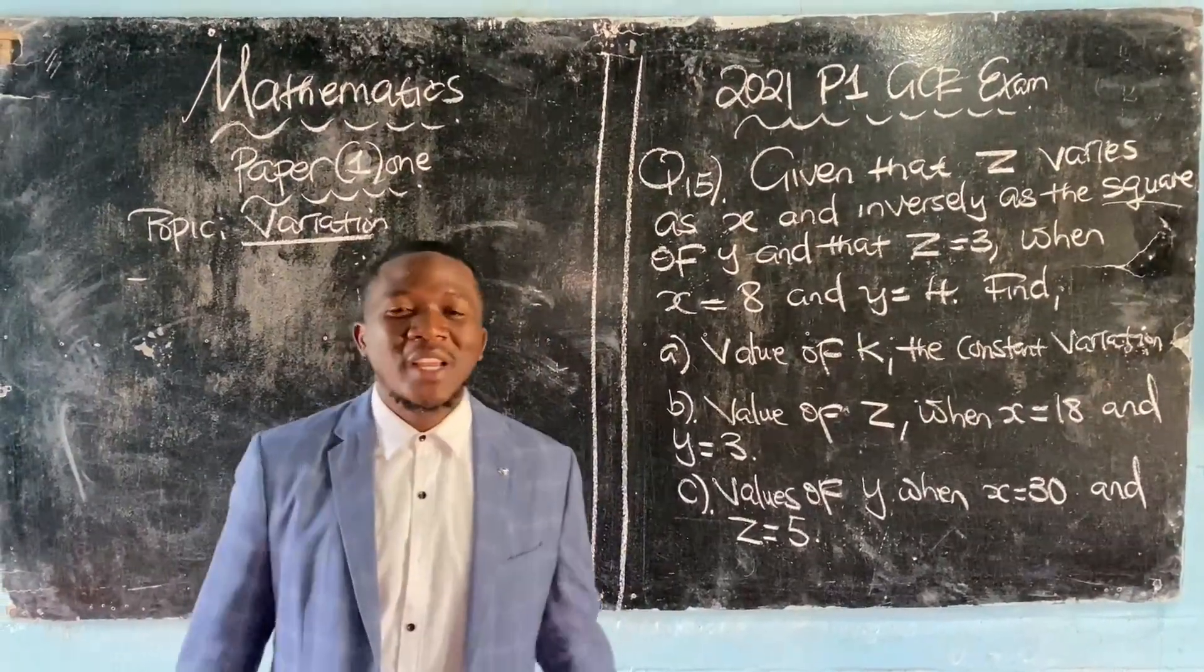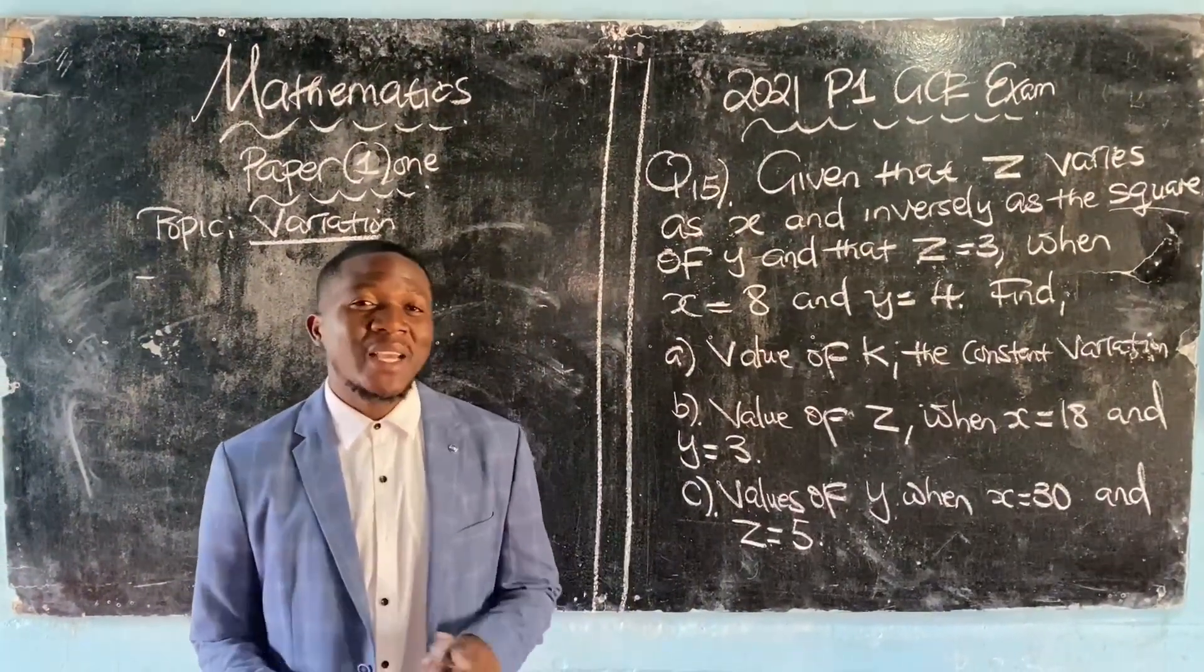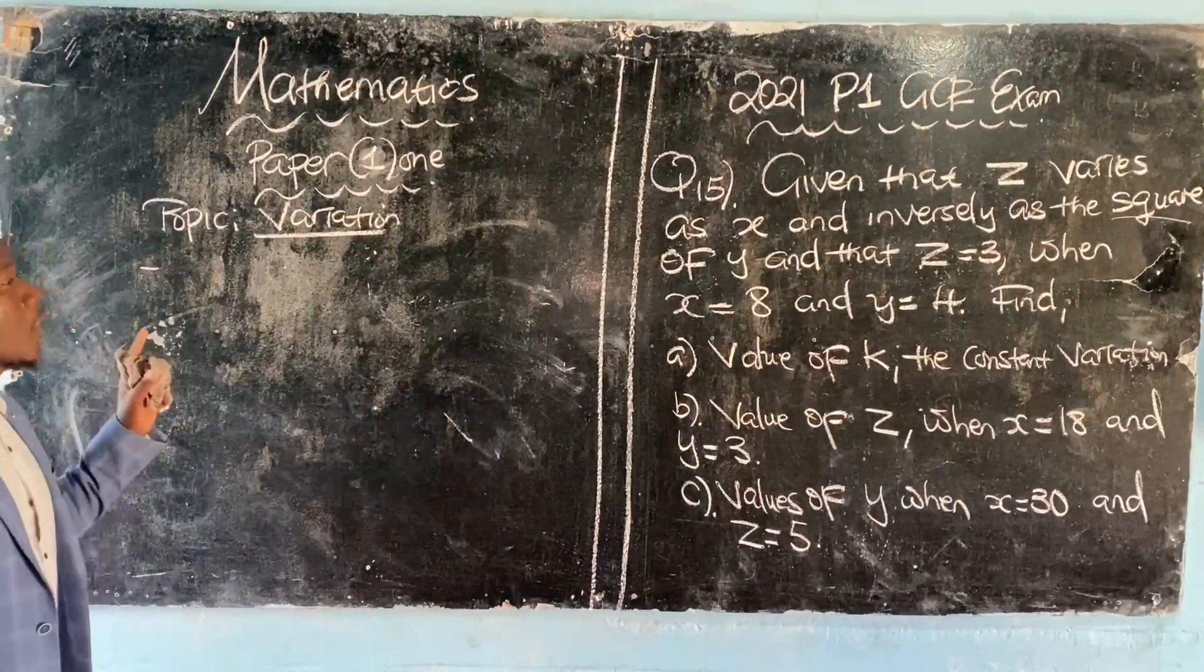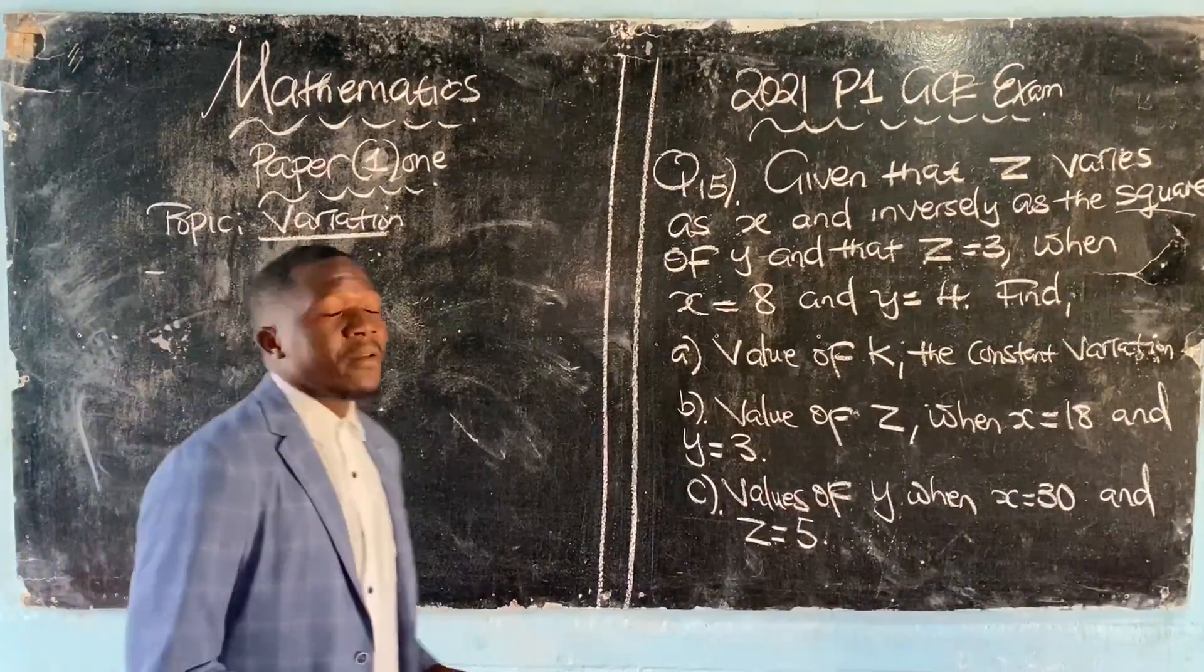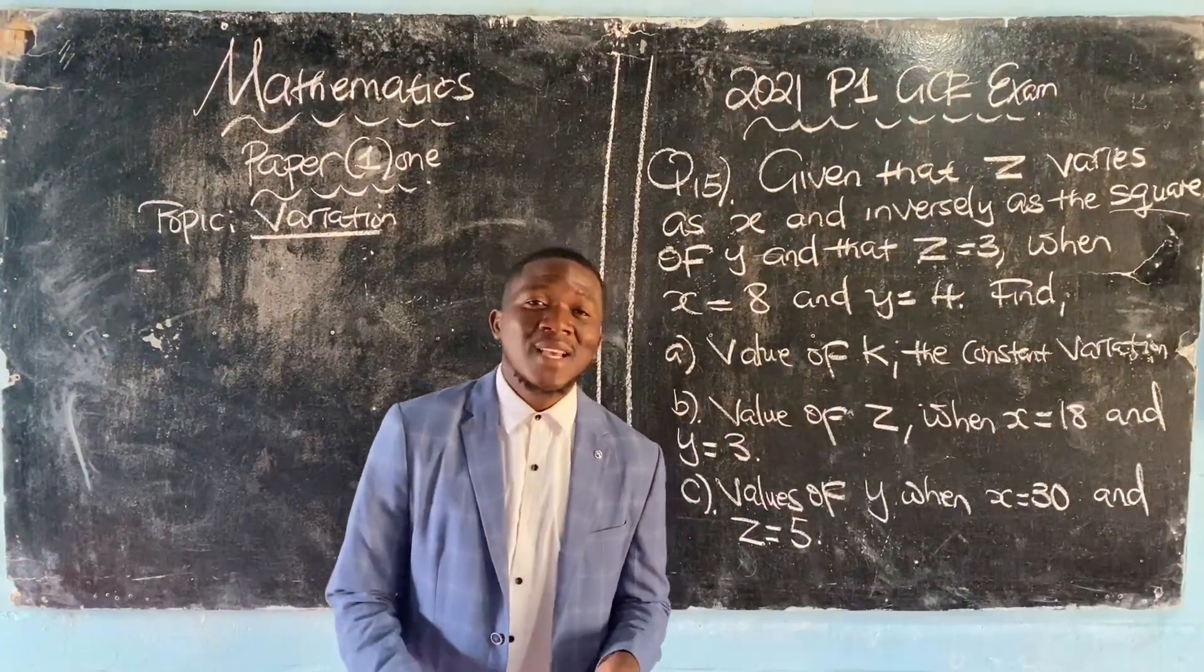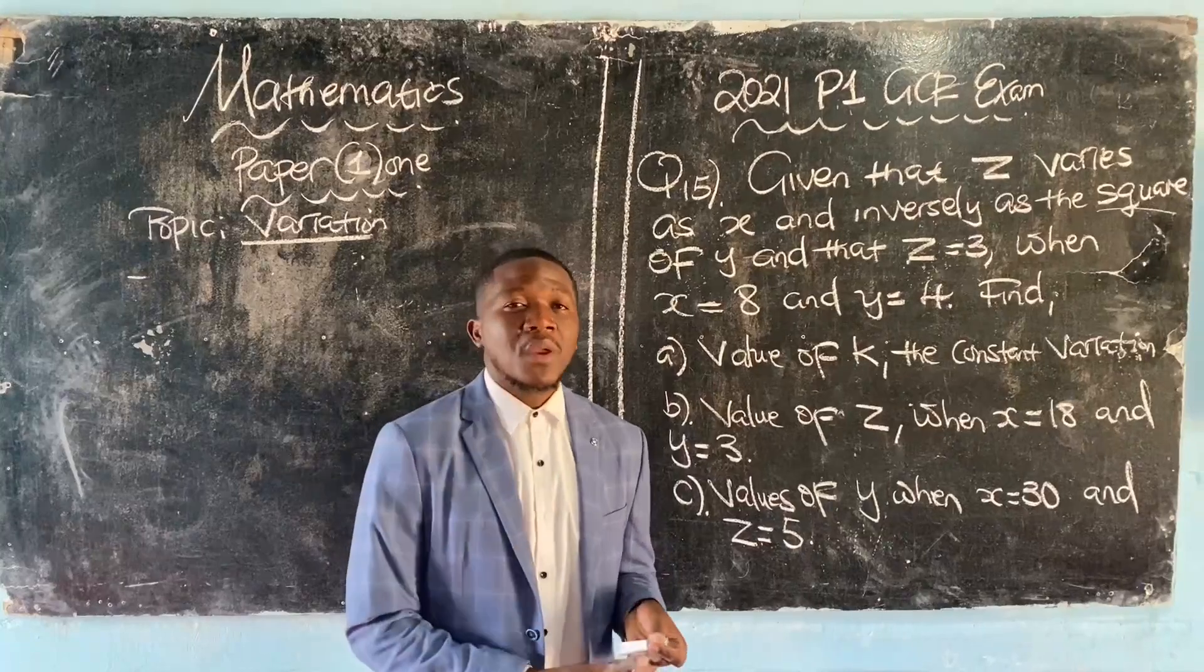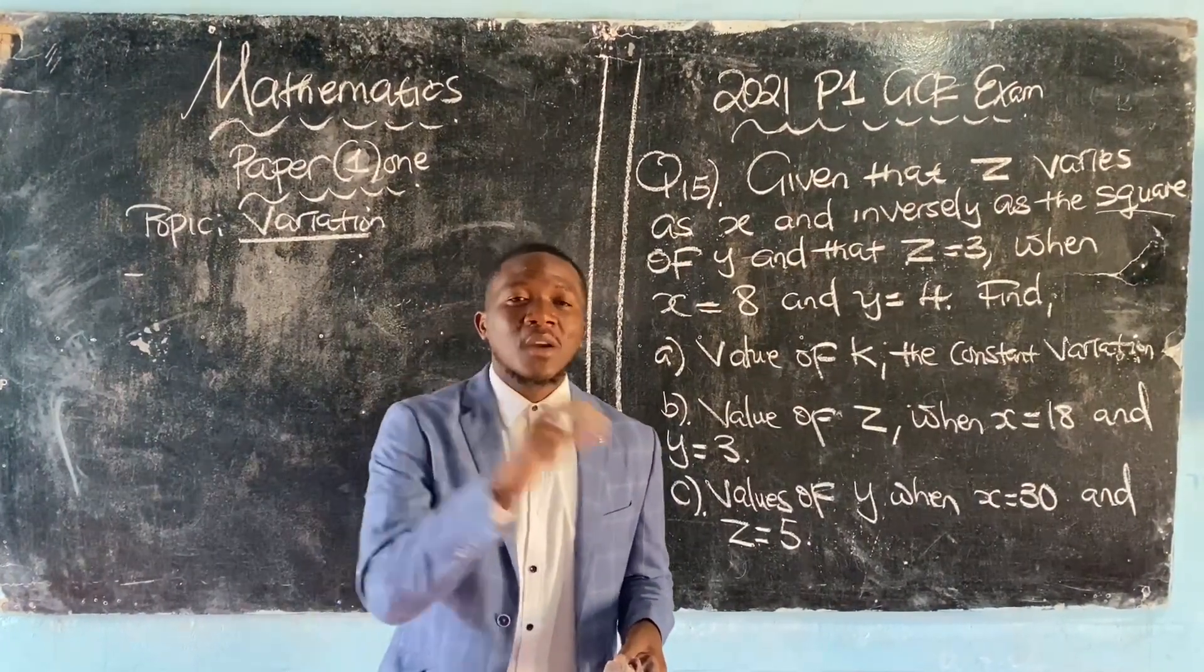Hi, good morning. In this tutorial, we are going to focus on Mathematics, on a topic called variation. Under variation, we should understand there is direct variation where you deal with two letters, inverse variation where you deal with three letters, and joint variation which is the combination of direct and inverse variation.